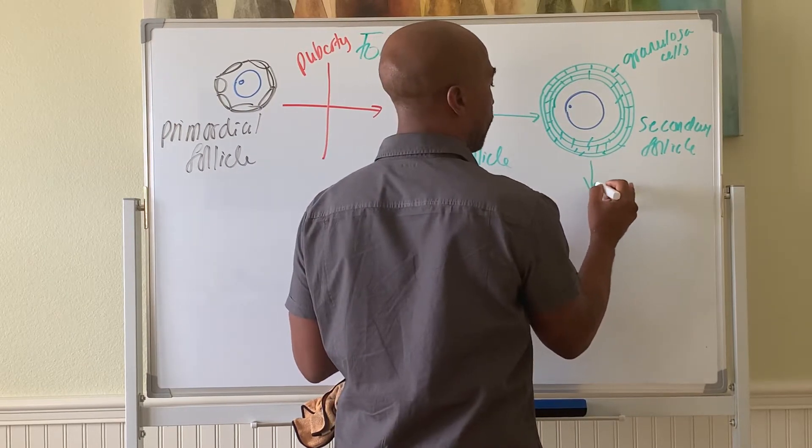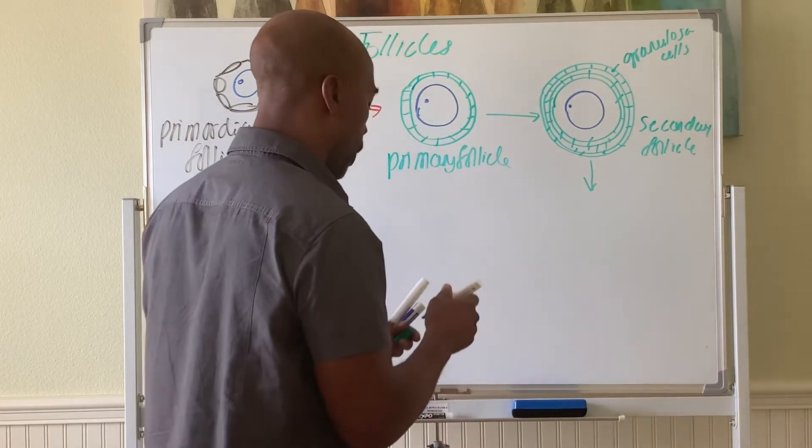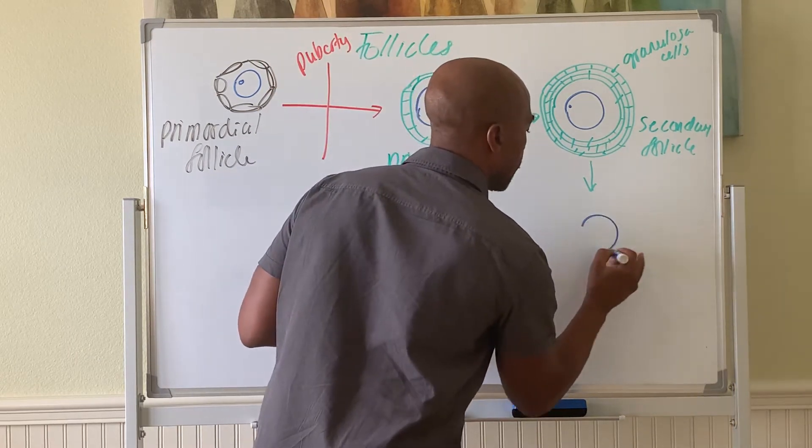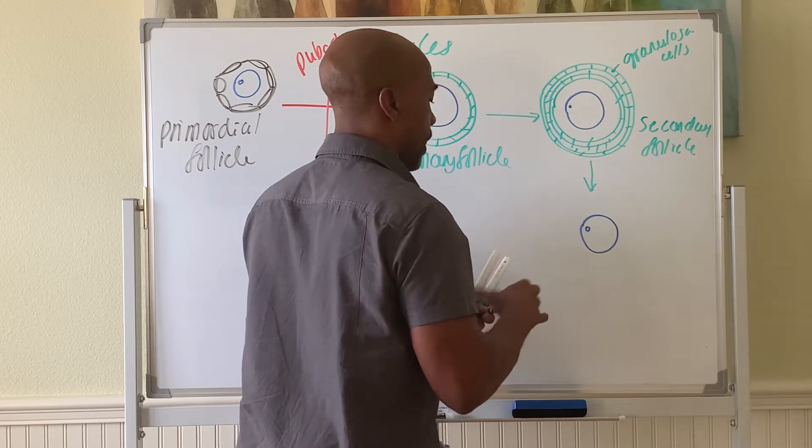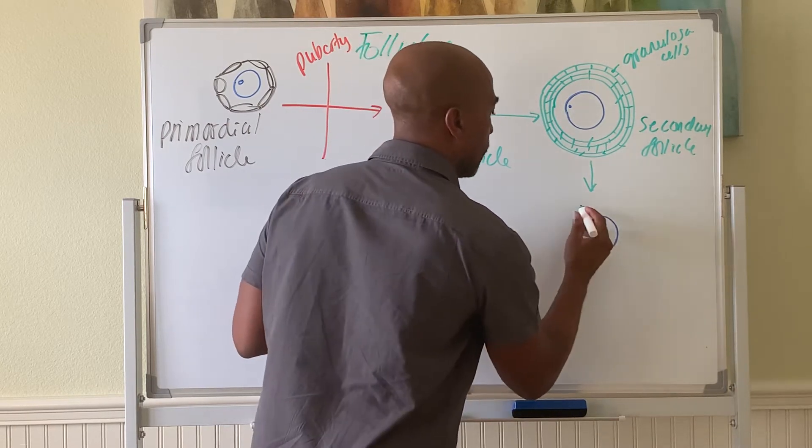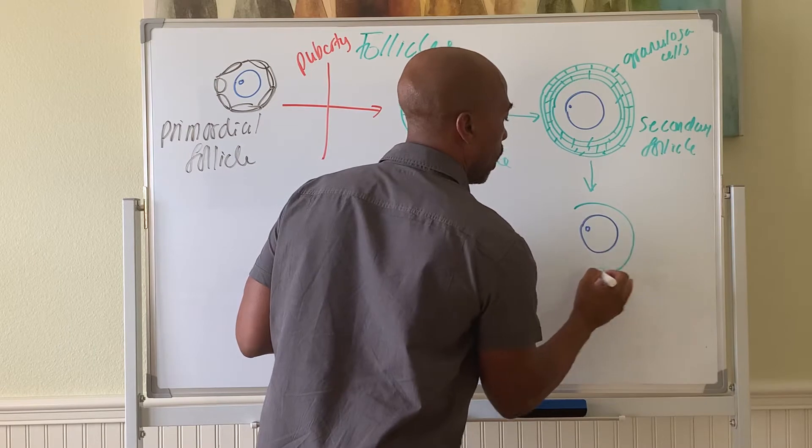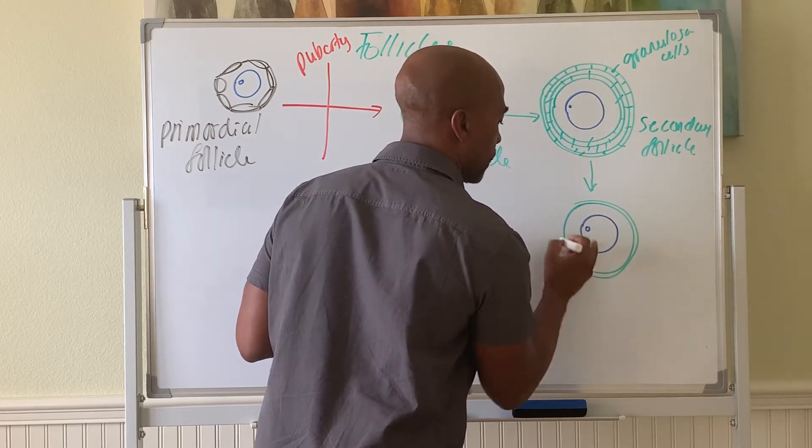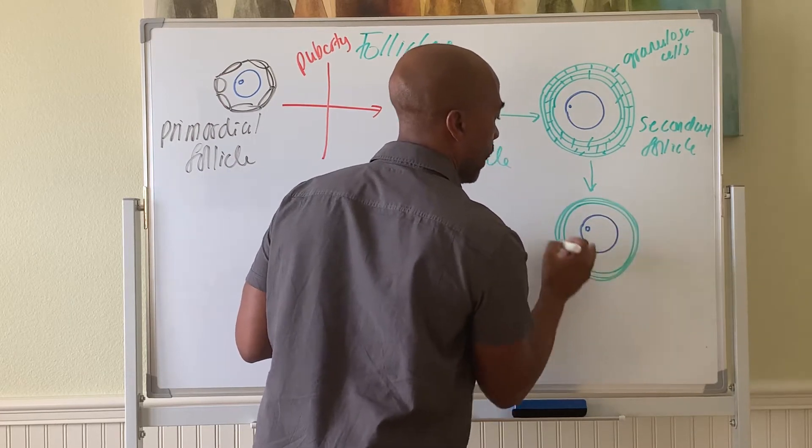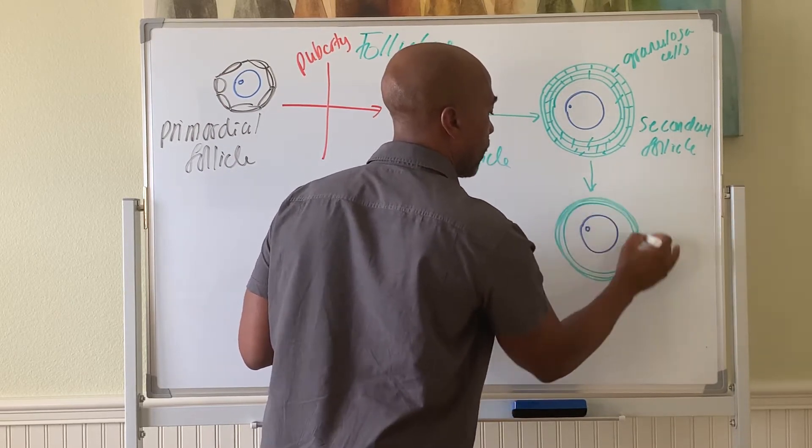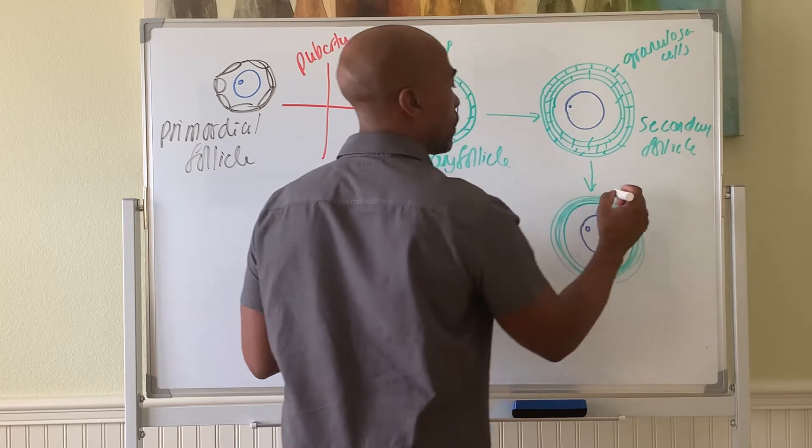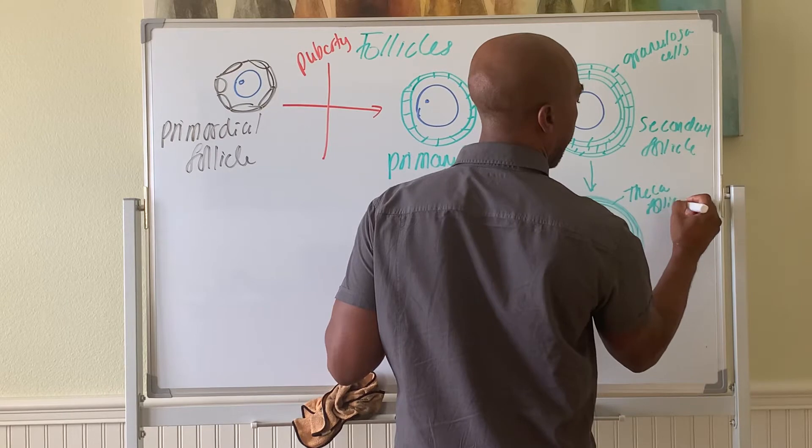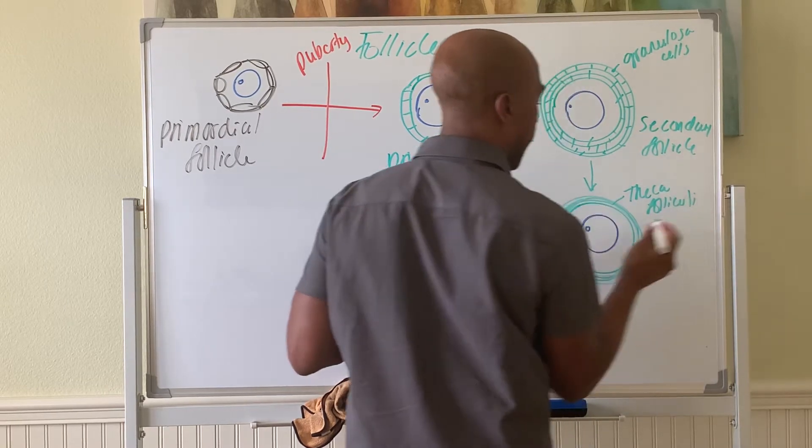At some point this kind of follicle gets even more mature. We have the oocyte here still. You have the follicle wall. But now the outer cells are more compressed into what's called a theca folliculi around the edge of it. Here is your theca folliculi around the edge.